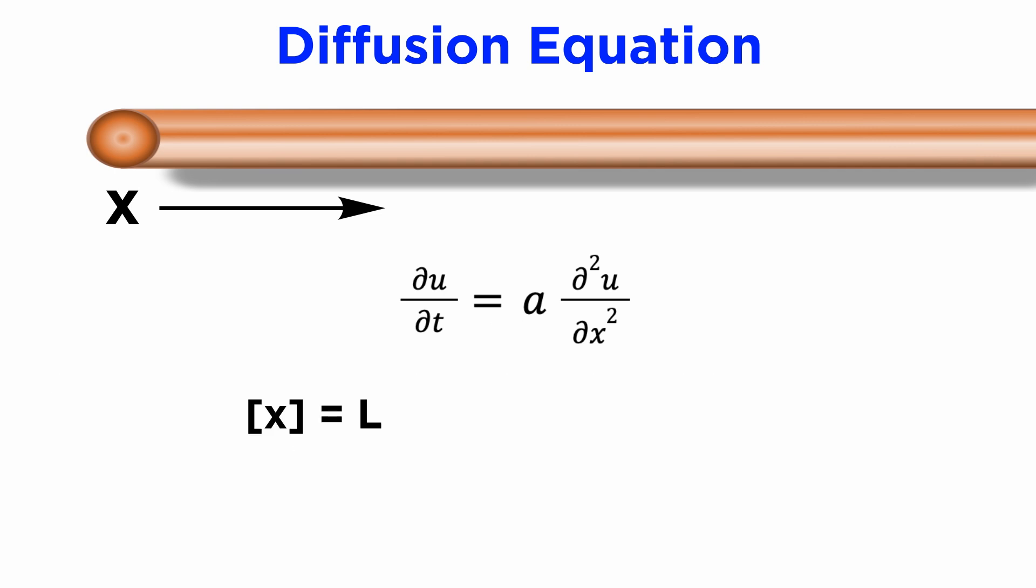Now thinking back to our goal of identifying a characteristic length scale lowercase x, its dimensions must be just length, or capital L, and we want to find some expression for the length x in terms of the other physical quantities in our PDE, which are the coefficient A and the time t, which we can write as a function x equals f of A t.